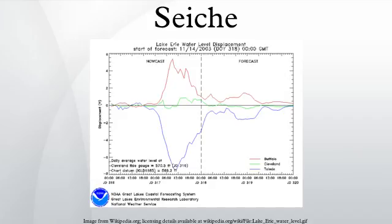Causes and nature of seiches. Seiches are often imperceptible to the naked eye, and observers and boats on the surface may not notice that a seiche is occurring due to the extremely long wavelengths. The effect is caused by resonances in a body of water that has been disturbed by one or more of a number of factors, most often meteorological effects, seismic activity or by tsunamis. Gravity always seeks to restore the horizontal surface of a body of liquid water, as this represents the configuration in which the water is in hydrostatic equilibrium.